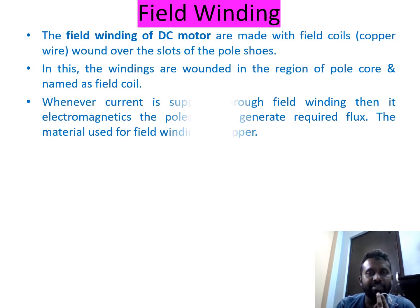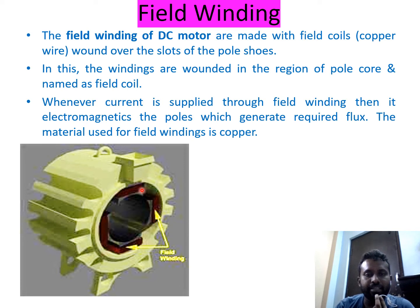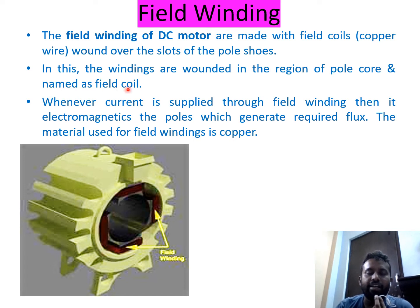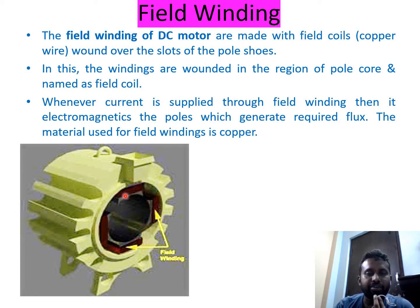Field windings of a DC motor are made of copper wires wound over the slots of the pole shoes, in the region of the pole core. Whenever current is supplied through the field winding, it electromagnetizes and generates the required flux. This is supplied by an external or internal machine source and creates a large amount of flux required for EMF induction or force development.